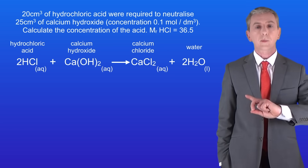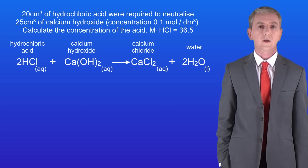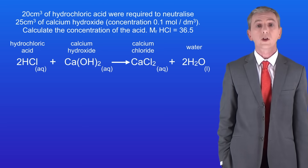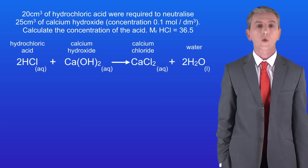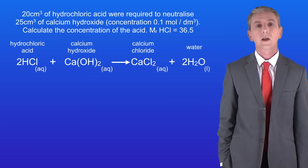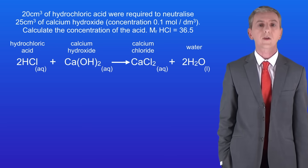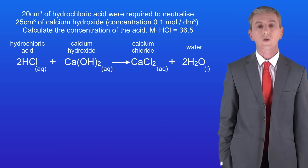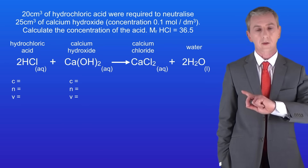Here's a sample question. 20 centimetres cubed of hydrochloric acid were required to neutralize 25 centimetres cubed of calcium hydroxide with a concentration of 0.1 moles per decimetre cubed. Calculate the concentration of the acid. As we saw before, first we write the letters C equals, N equals, and V equals under both the acid and the alkali like this.